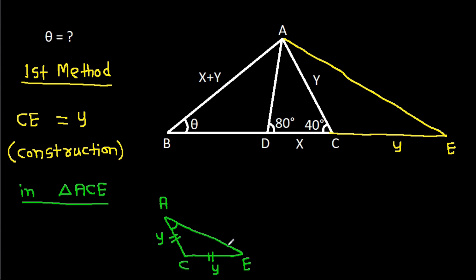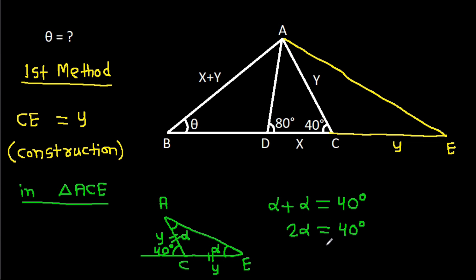That means these two angles will be equal. Suppose each is alpha. And this angle is 40 degrees. So alpha plus alpha equals 40 degrees, and 2 alpha equals 40 degrees, so we get alpha equals 20 degrees. This angle is 20 degrees and this angle is 20 degrees.